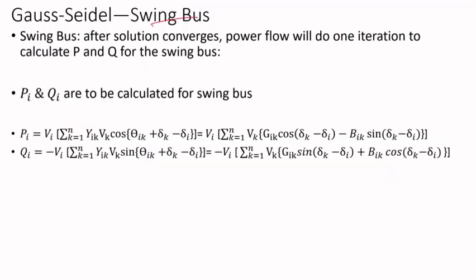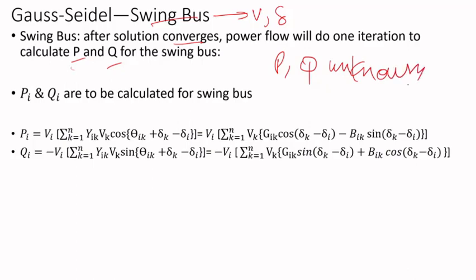For the swing bus, after the power flow solution converges for all buses, the program goes through one more iteration to calculate P and Q at the swing bus — because for the swing bus, voltage magnitude and angle are known but P and Q are unknown.